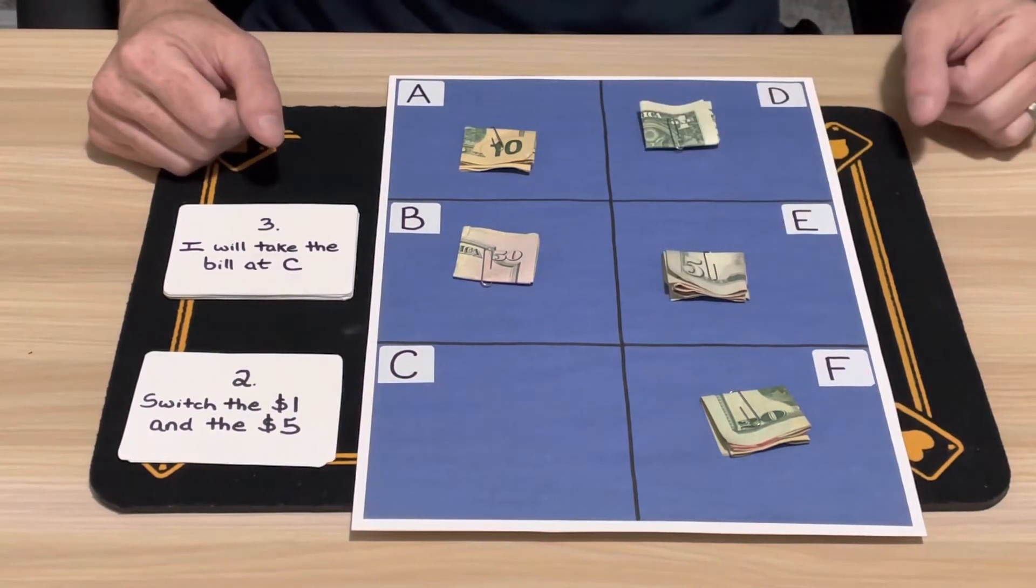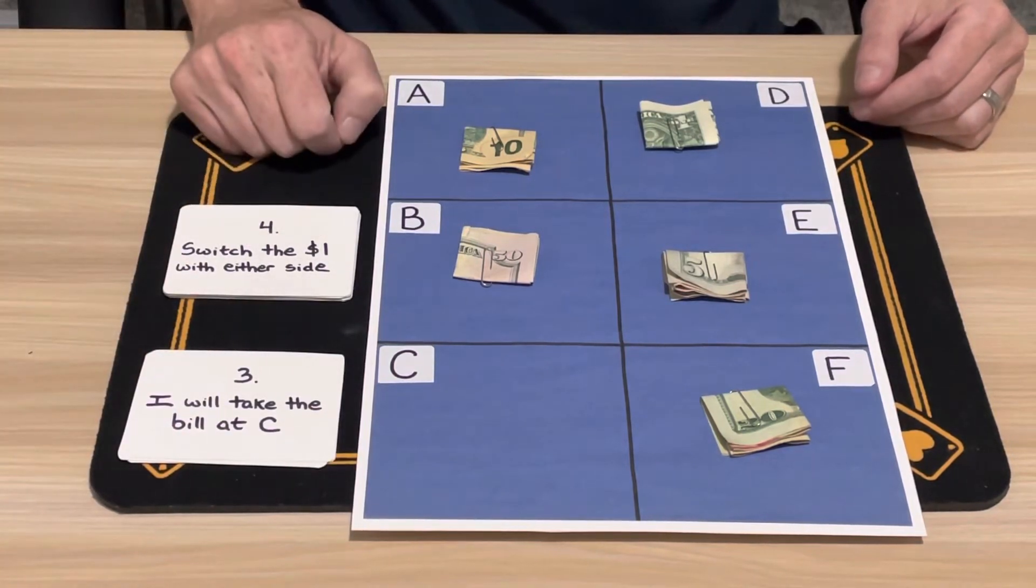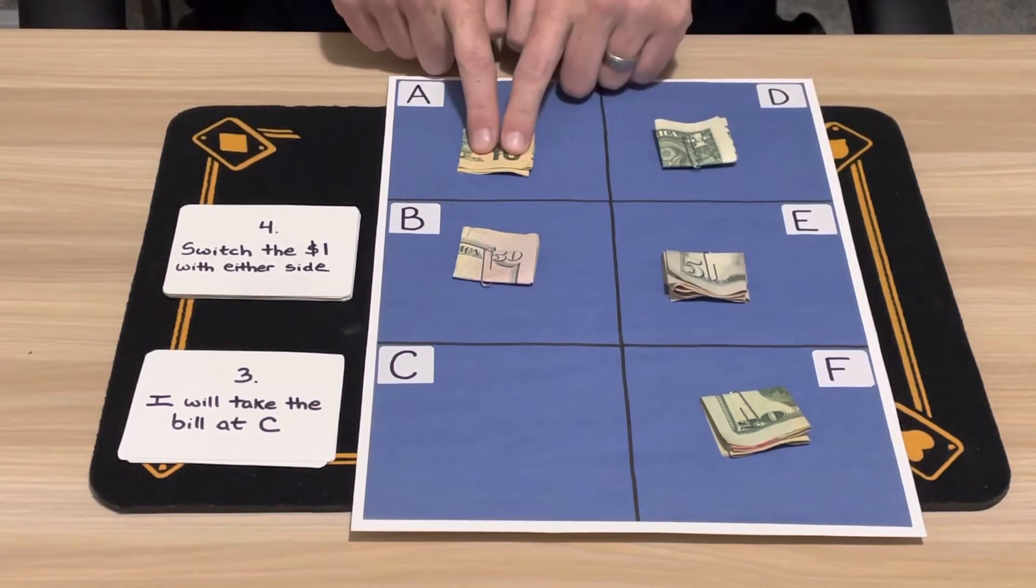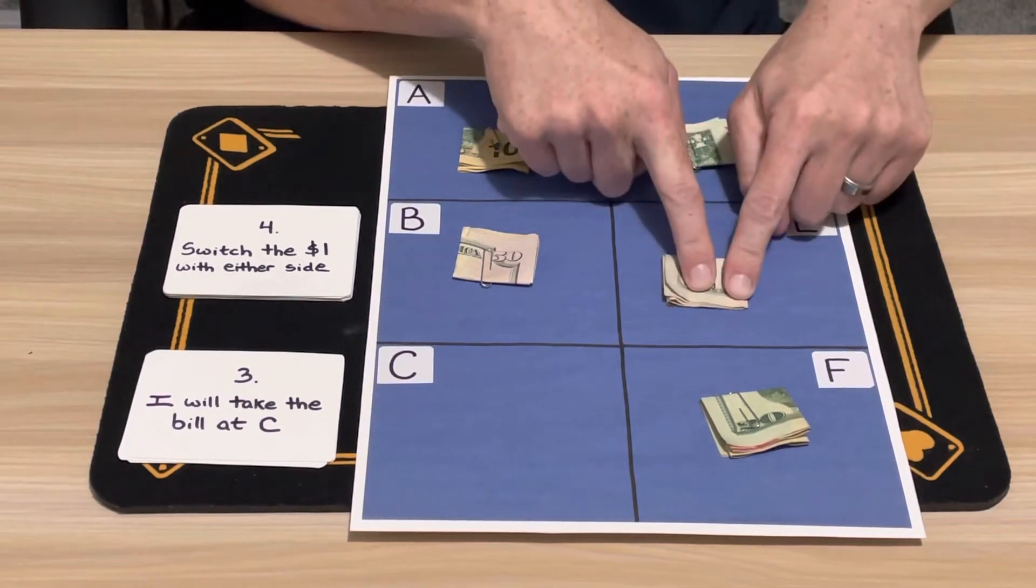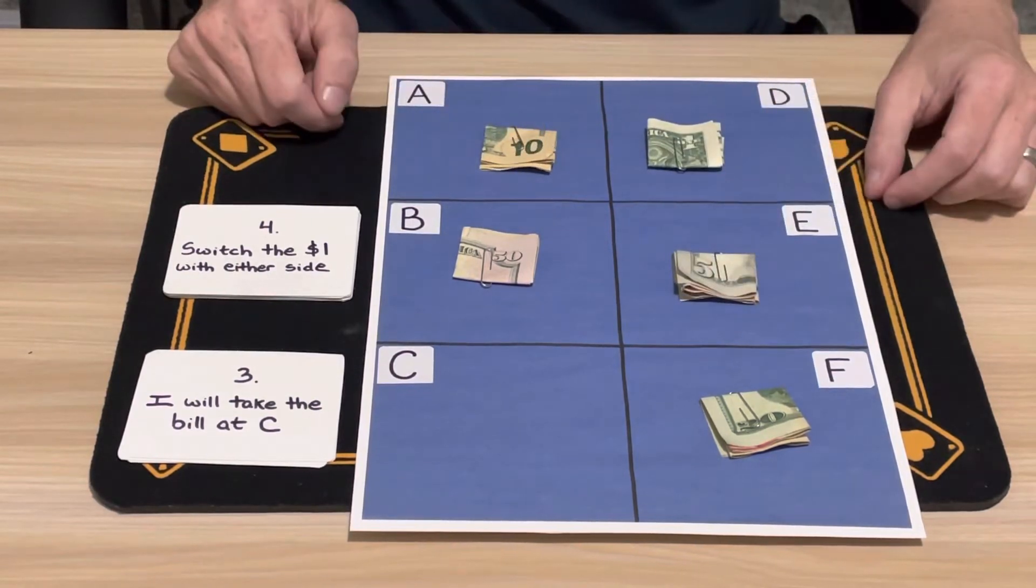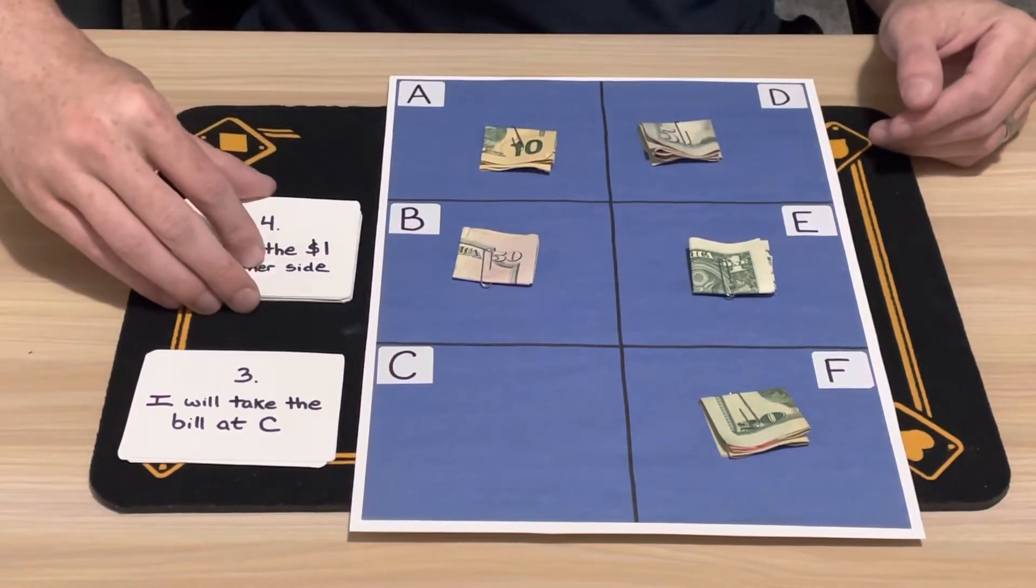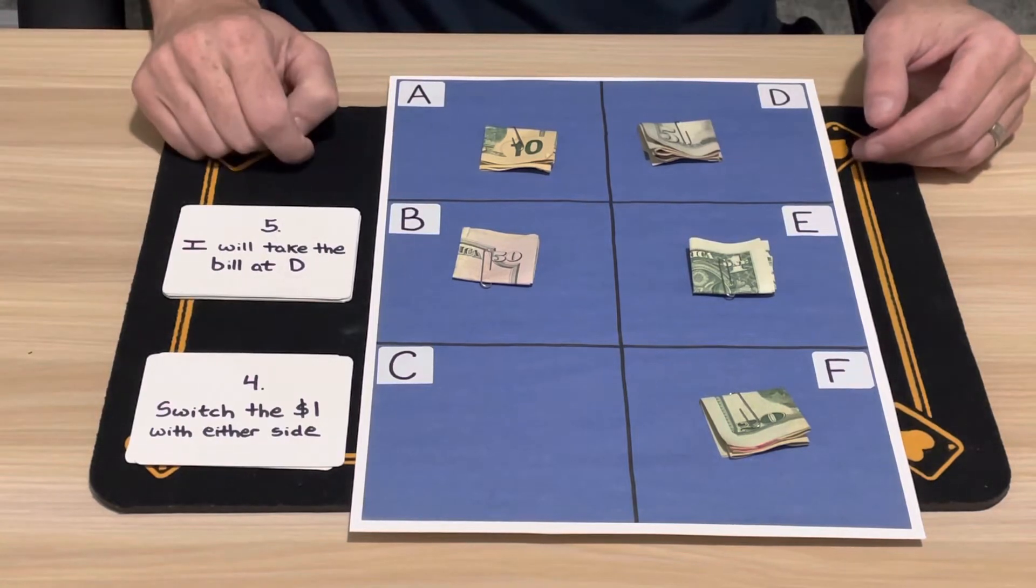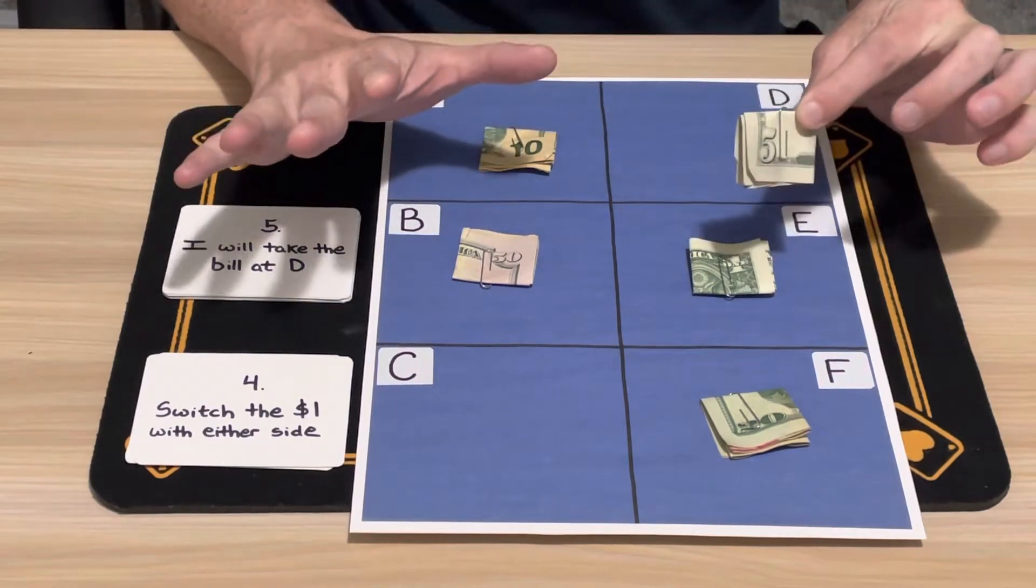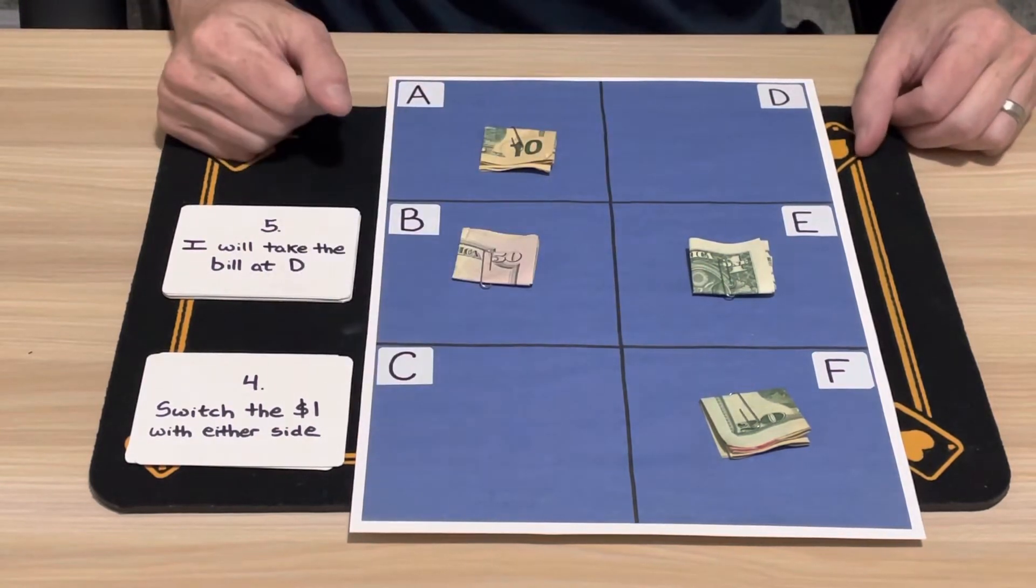Step four: switch the $1 bill with either side. So here's the $1 bill. Either side means they can switch it with this bill here or down with this bill here—free choice by the spectator. Let's just say they switch it with this one here. Step five: I will take the bill at D, which is the $5 bill. That's okay, no big deal. Only $5. We still got the $10, the $50, and the $20 possible for the spectator to win.